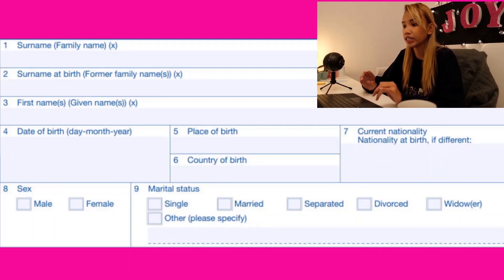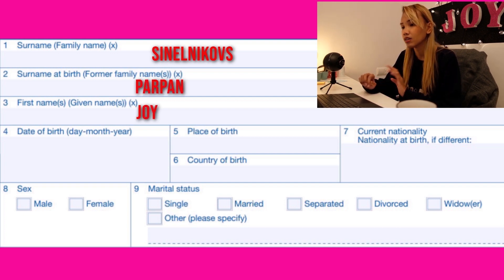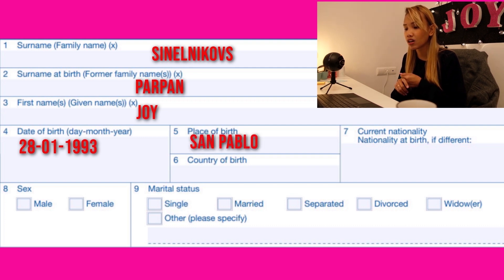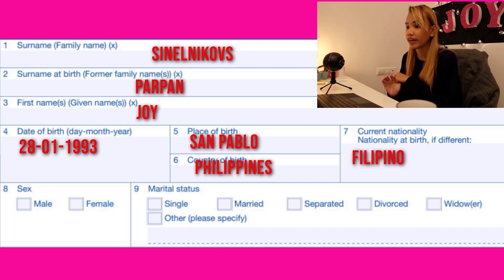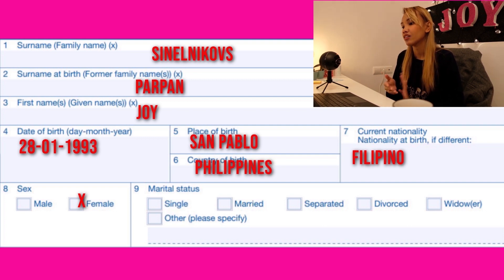For numbers one through nine, these are just basic information about yourself. We have the surname or family name, surname at birth, given name, and birthday — make sure your date of birth is arranged by day, month, and year. Then we have place of birth, country of birth, current nationality, and nationality at birth, which is different if you were born in a different country. Number eight is your sex — male or female. Number nine is marital status. These are easy questions you can fill up by yourself.